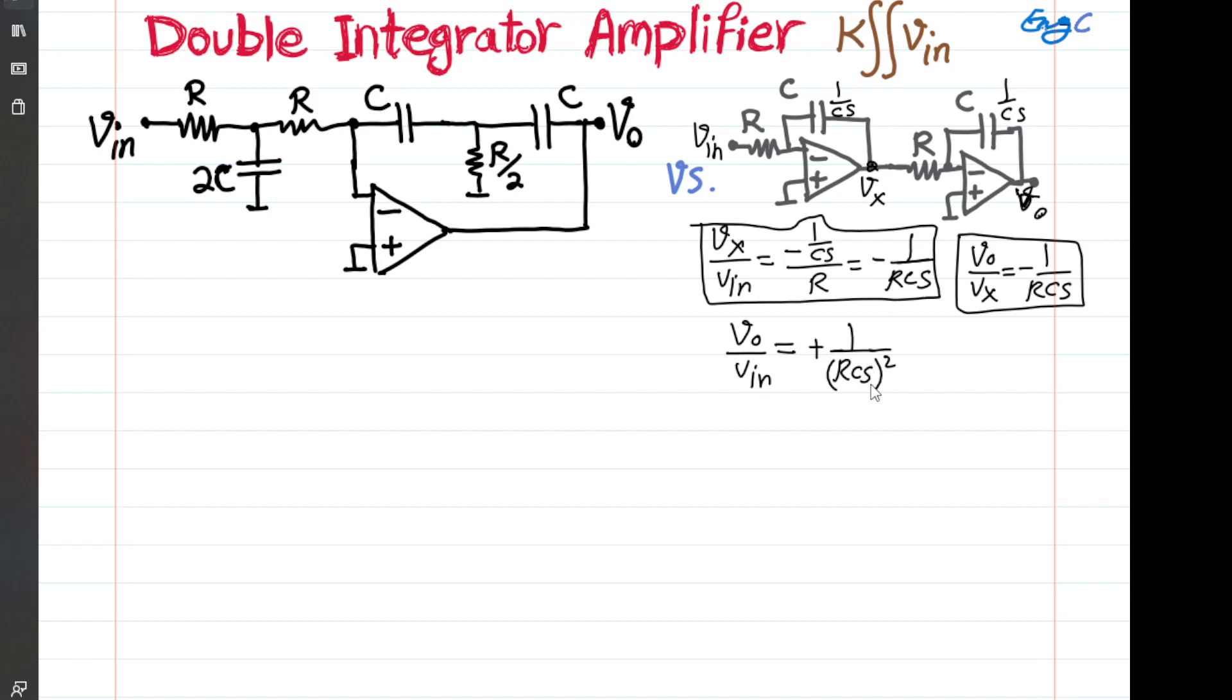That is in S domain. In time domain, you would have Vout equal to 1 over R squared CS squared, double integral, integral integral Vin as a function of time, and then dt and then dt.